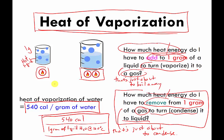Whenever you write heat of vaporization, it'll be expressed as x energy units — could be calories, could be joules, or other units — per one gram of the material. The value of x will be different for different substances: for water it's 540, for gasoline it would be something different. Don't memorize those numbers; they'll be given on a quiz or test and you need to understand how to use them. There's no separate heat of vaporization calculation to show because it's essentially identical to the heat of fusion calculation we already did. That's it for heat of vaporization and heat of fusion.